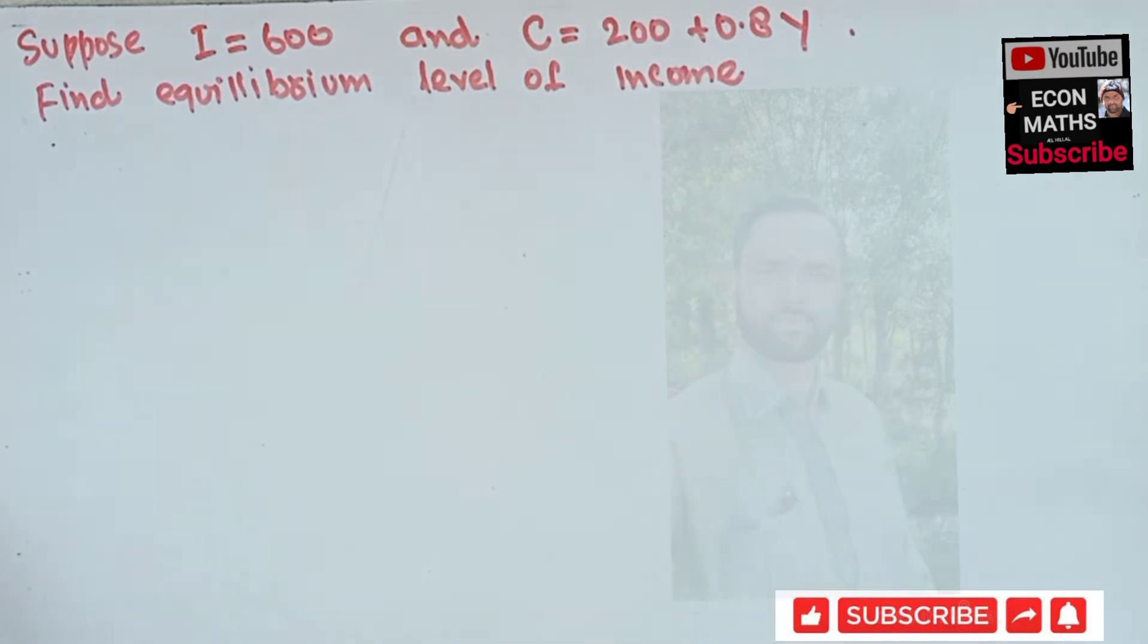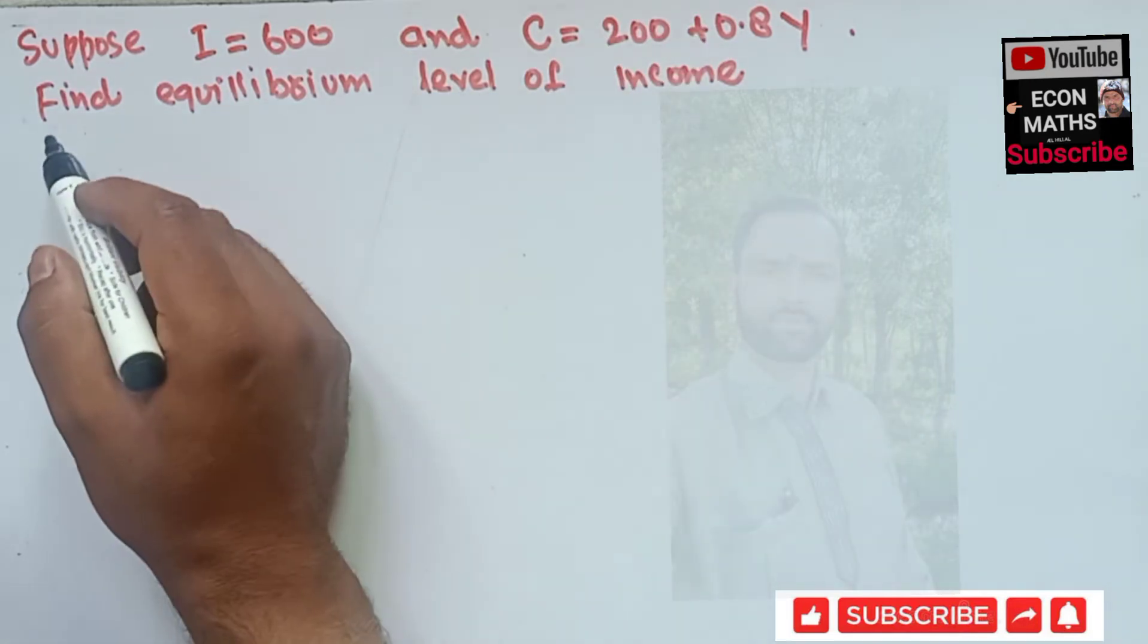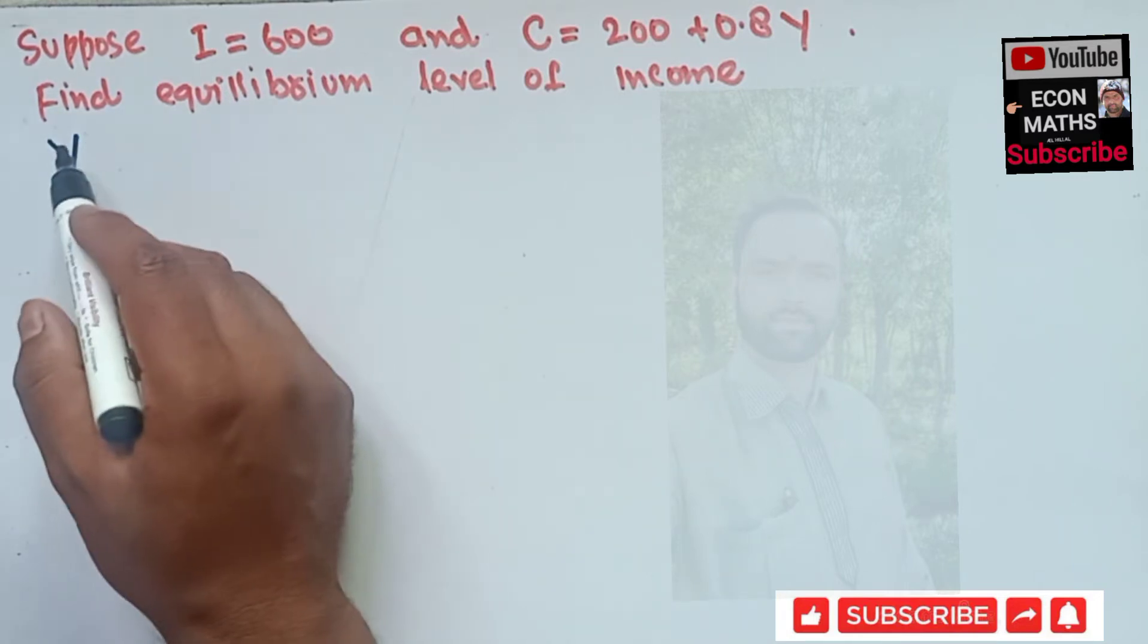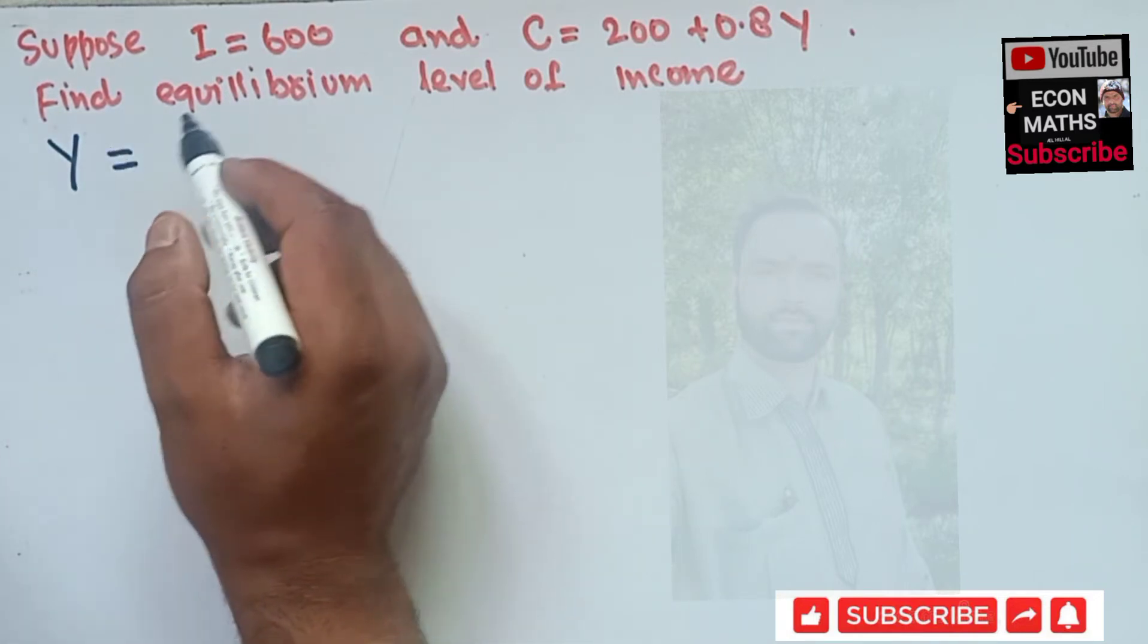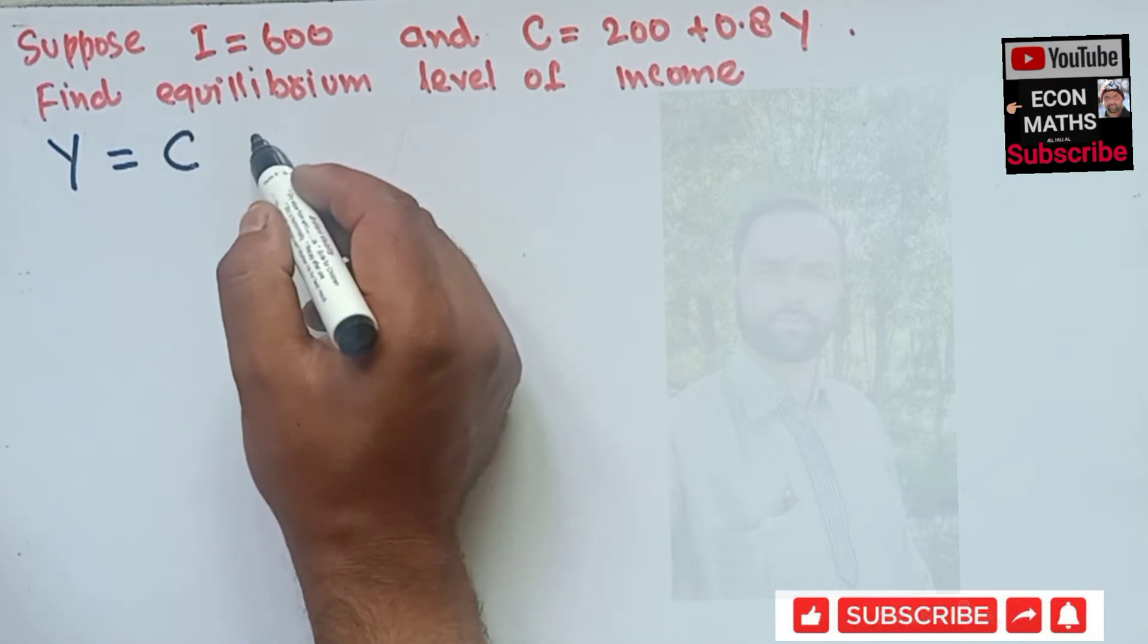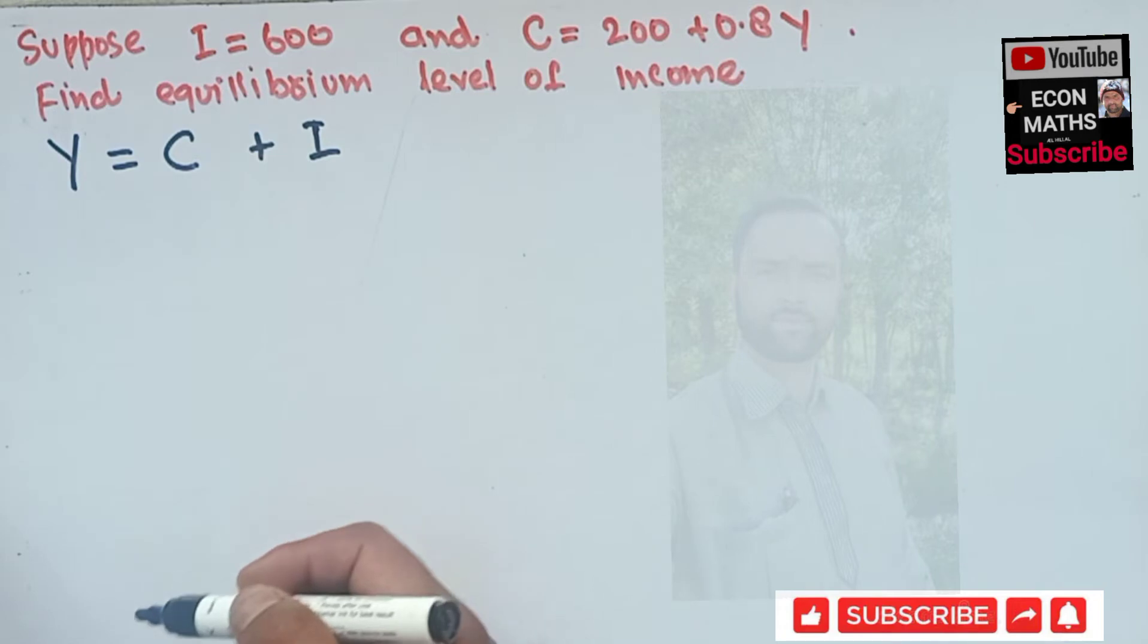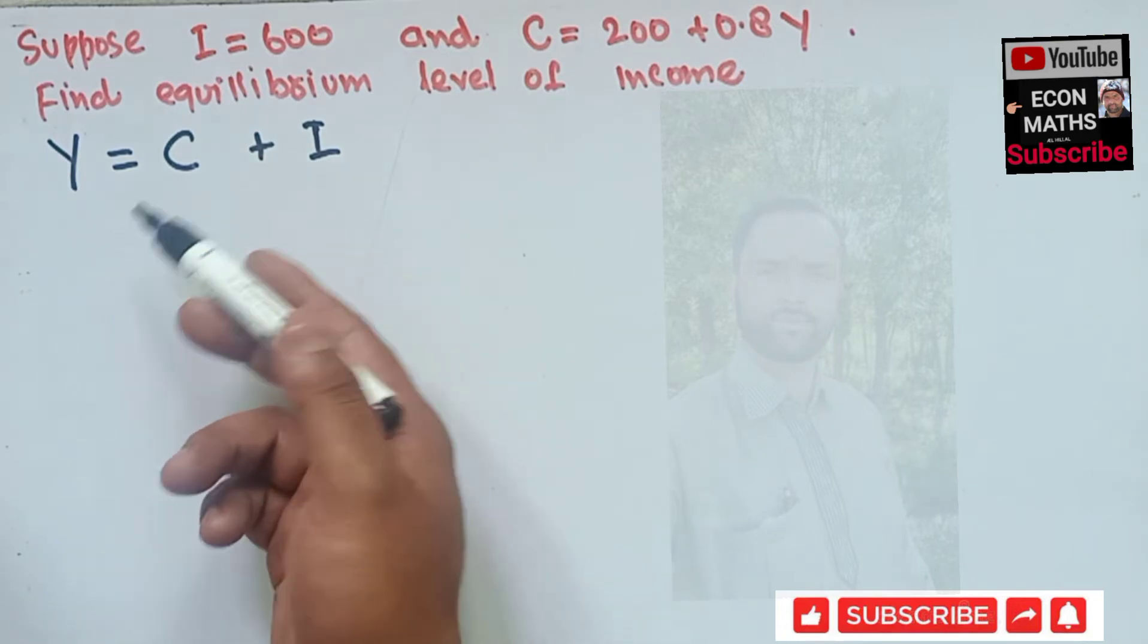We have to find the equilibrium level of income, and we know our identity is that our income should be equal to the consumption expenditure plus investment expenditure. Because no G is involved here, so we will stick to these two terms.